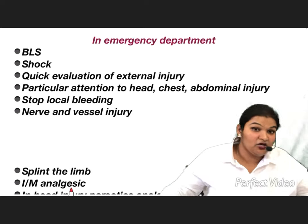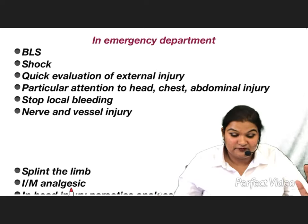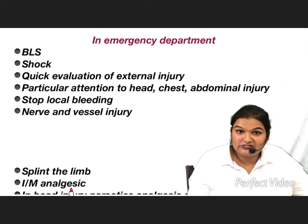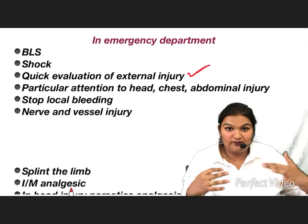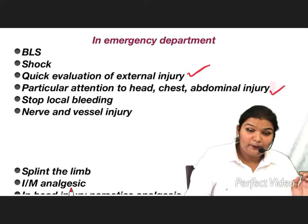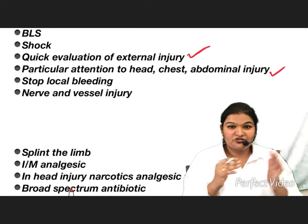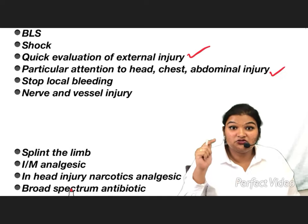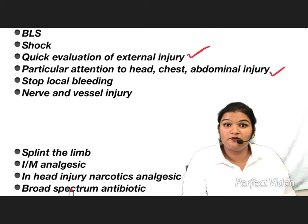When the patient is transported to the emergency department, follow these steps — do not go directly to treating the fracture. First, give basic life support: check for shock; if vitals and BP are low and pulse is feeble, start fluid therapy immediately. Then do a quick evaluation of external injuries and control any bleeding. Give particular attention to head, chest, abdominal, and back injuries — do not forget the back, as missed posterior injuries can cause constant blood loss and patient deterioration.